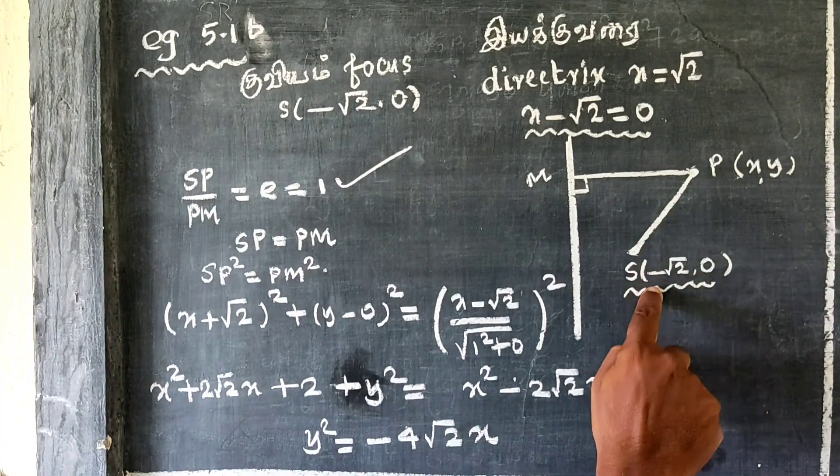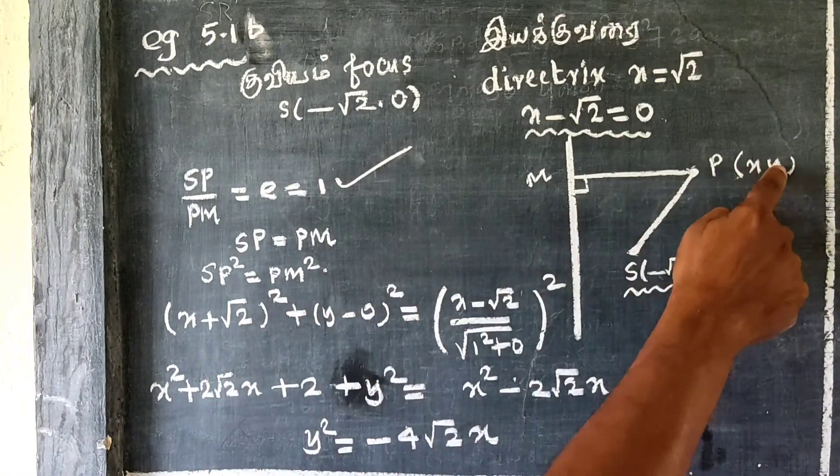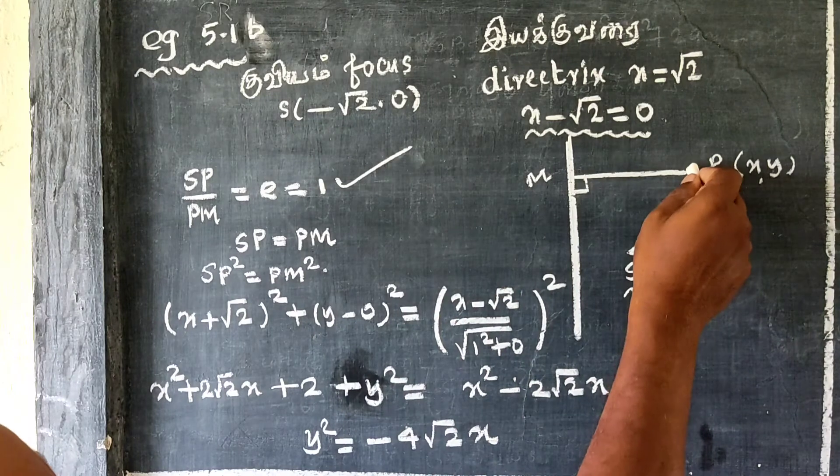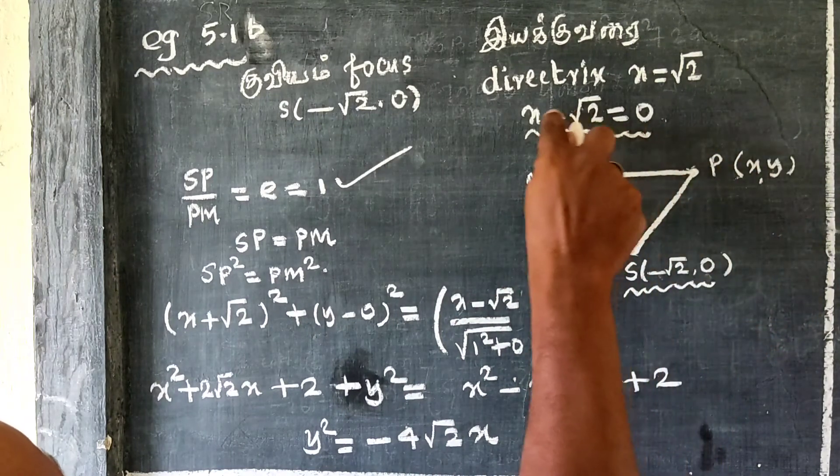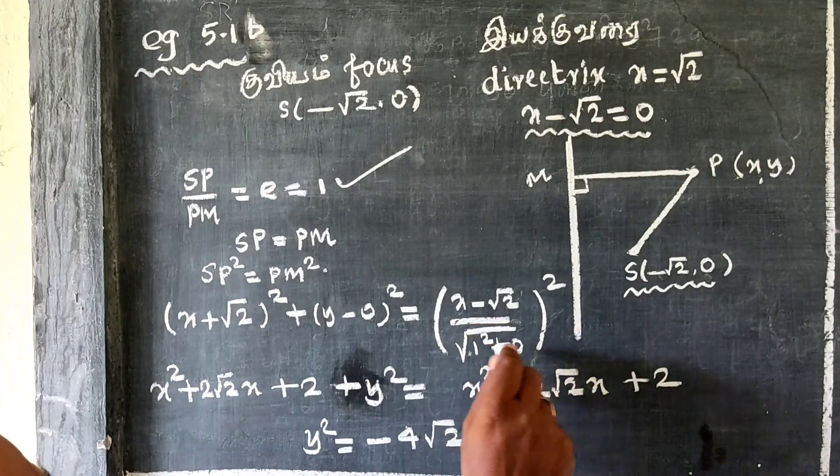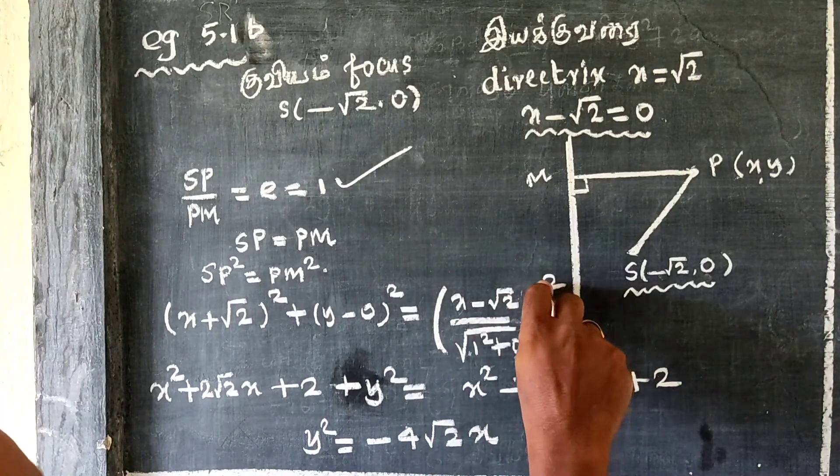This is the distance squared: (x + √2)² + (y - 0)² equals the perpendicular distance to the directrix, which is (x - √2)² divided by 1.